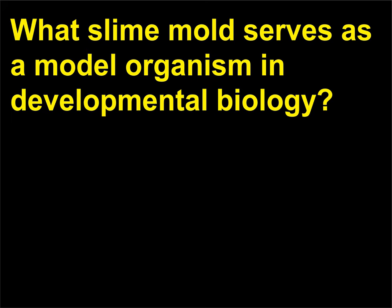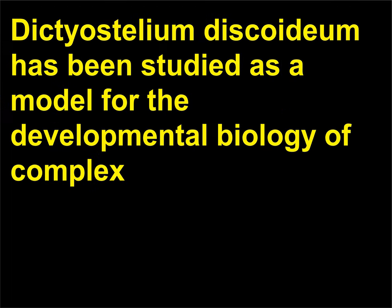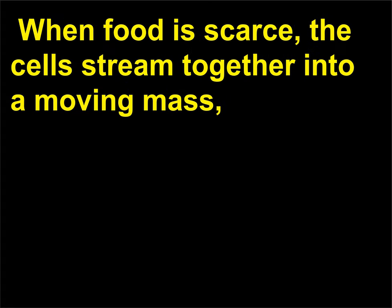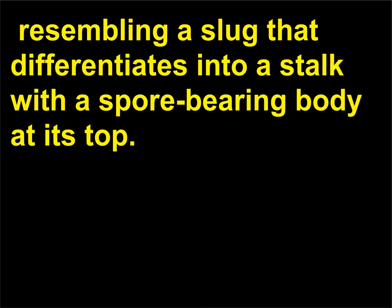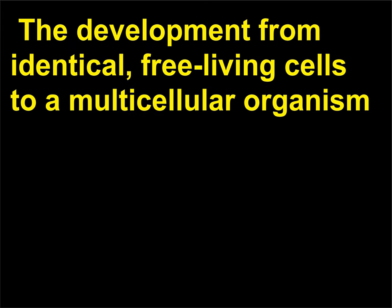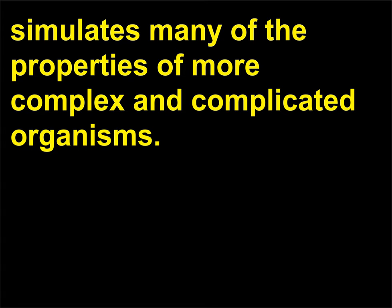What slime mold serves as a model organism in developmental biology? Dictyostelium discoideum has been studied as a model for the developmental biology of complex organisms. Under optimum conditions, this organism lives as individual amoeboid cells. When food is scarce, the cells stream together into a moving mass resembling a slug that differentiates into a stalk with a spore-bearing body at its top. This structure releases spores that can grow into a new amoeboid cell. The development from identical, free-living cells to a multicellular organism simulates many of the properties of more complex and complicated organisms.